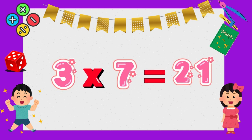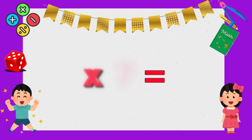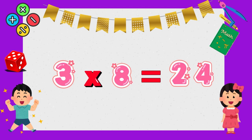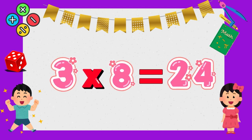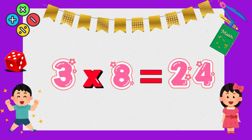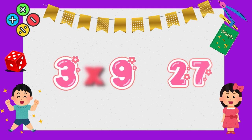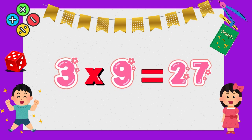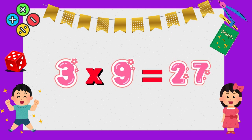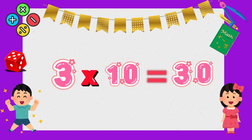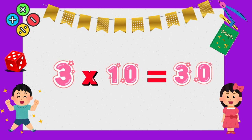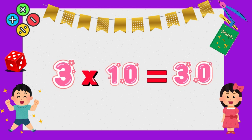Three times eight is twenty-four. Three times nine is twenty-seven. Three times ten is thirty.